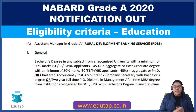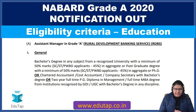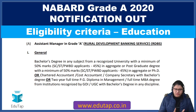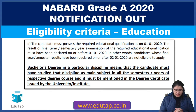Coming to eligibility criteria in terms of education: the minimum percentage required is 50% for General and OBC categories. For SC, ST, and PwBD applicants, the minimum is 45%. For postgraduate degrees, the minimum mark requirement is again 50%. Please verify your eligibility before applying.